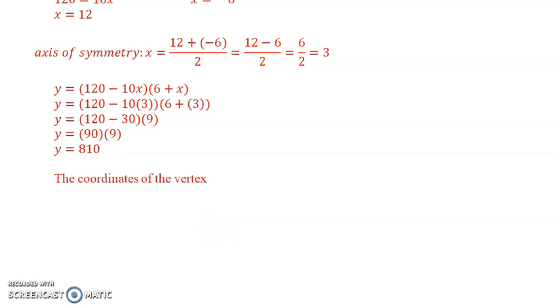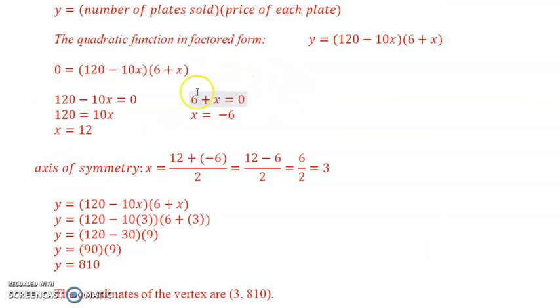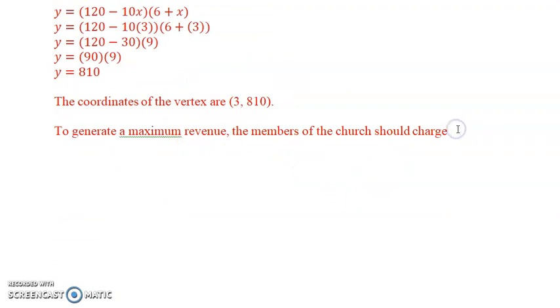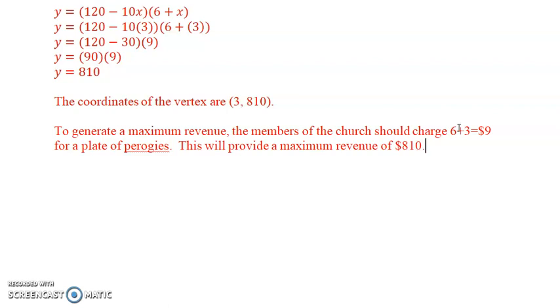So the coordinates of the vertex are 3 and 810. So what does that mean? To generate a maximum revenue, the members of the church should charge - the cost, remember, it was six plus three - nine dollars for a plate of pierogies, and don't we love pierogies, I know I do. And this will provide a maximum revenue of 810, which is pretty neat.